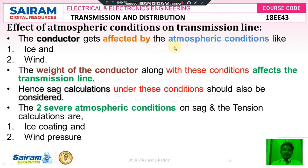The conductor gets affected by atmospheric conditions like ice and wind. The weight of the conductor along with these conditions also affects the transmission line, because during winter season due to snowfall, snow forms as an outer surface layer on the bundle conductor, increasing the overall weight. Hence sag calculations under these conditions must also consider the weight or effect of ice on the conductor. The two severe atmospheric conditions affecting sag and tension of overhead transmission line calculations are ice coating and wind pressure.